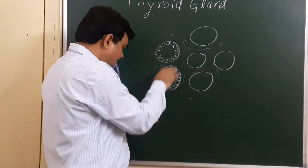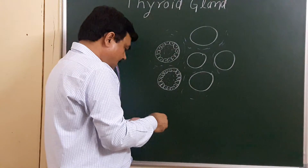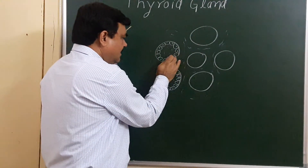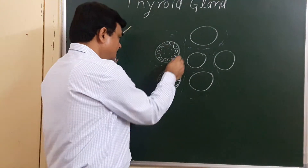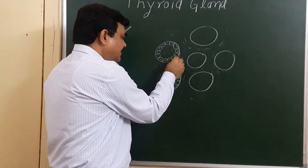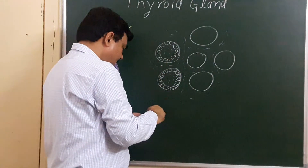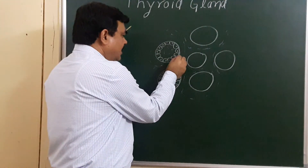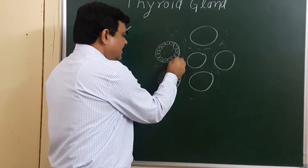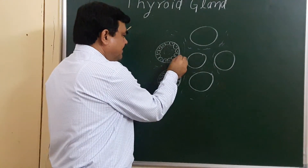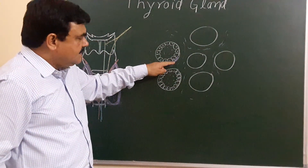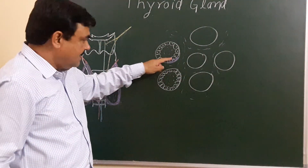These are follicular cells, and parafollicular cells are also present. The parafollicular cells are located between the basement membrane and the follicular cells.